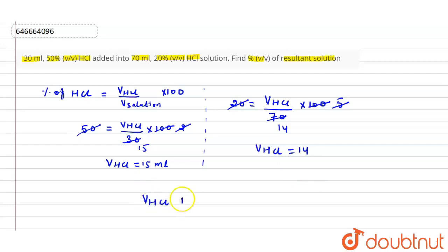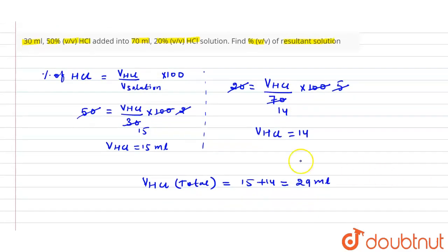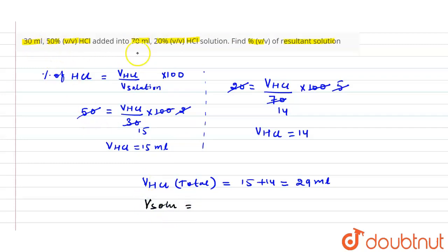The total volume of HCl is 15 + 14 = 29 ml. The total volume of the solution is 30 ml + 70 ml = 100 ml.